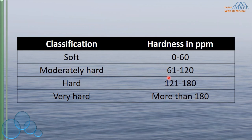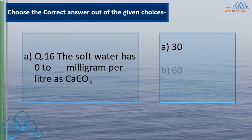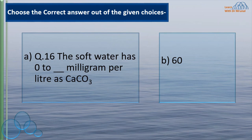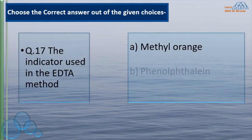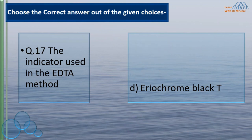Hardness ranges: soft water is 0–60 ppm; moderately hard is 61–120 ppm; hard water is 121–180 ppm; very hard water is above 180 ppm. Soft water has 0 to how many milligrams per litre as calcium carbonate? The correct answer is 60 — soft water has 0 to 60 mg/L as calcium carbonate. The indicator used in the EDTA method to determine hardness of water is Eriochrome Black T.